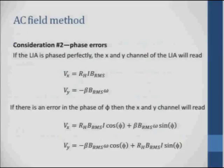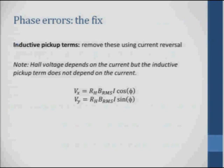Notice I carefully said that if you could phase your lock-in to the magnetic field you would have that condition, but of course you can't always do that accurately. So what is the effect of a phase error? If I had a phase error of φ, then what I would measure in my lock-in would look more complicated because I've now mixed the Hall voltage and the inductive pickup. However, the Hall voltage depends on current while the inductive pickup doesn't. So if I do current reversal — for a different reason than in the DC case — I can eliminate the inductive term and get Vx and Vy that depend only on the Hall voltage. I can measure my Hall voltage by doing current reversal in an AC measurement.